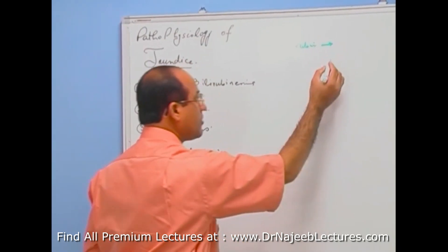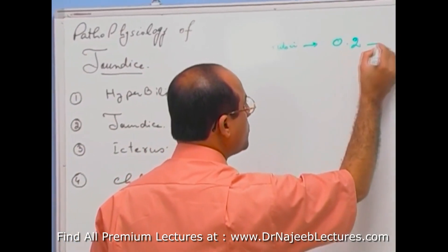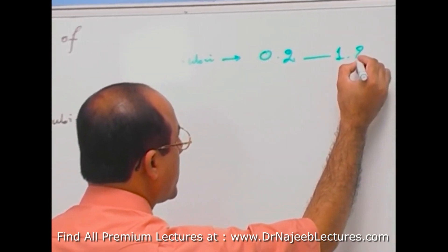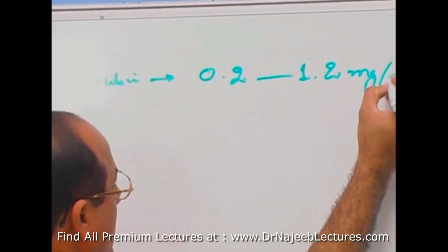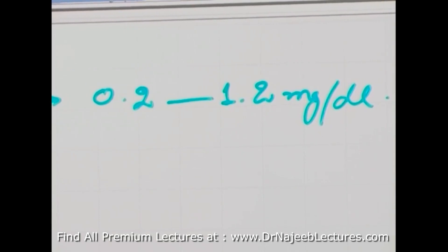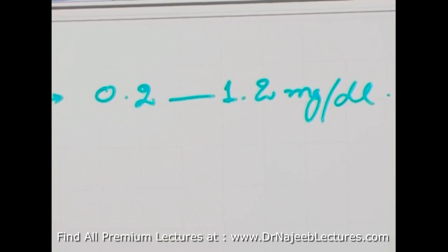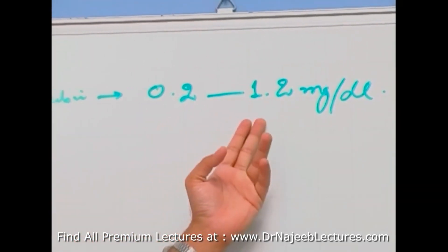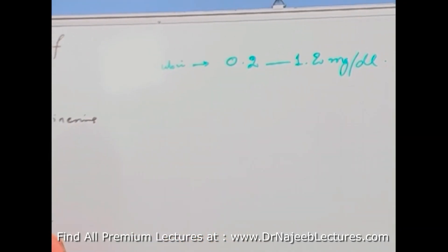0.2 to some people 1.2 milligram per dL. Some people take it up to 1.6. Anyway, if we say this is the normal level of bilirubin 0.2 to 1.2 milligram per dL, right?